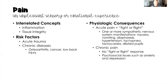For physiologic consequences, with acute pain we have that fight-or-flight response — a sympathetic nervous system response. We tend to see sympathetic nervous system clinical manifestations such as nausea, vomiting, sweating, hypertension, tachypnea, tachycardia, and dilated pupils. In chronic pain, there is no fight-or-flight response — instead, these are usually psychosocial issues such as anxiety or depression brought about by that persistent pain.